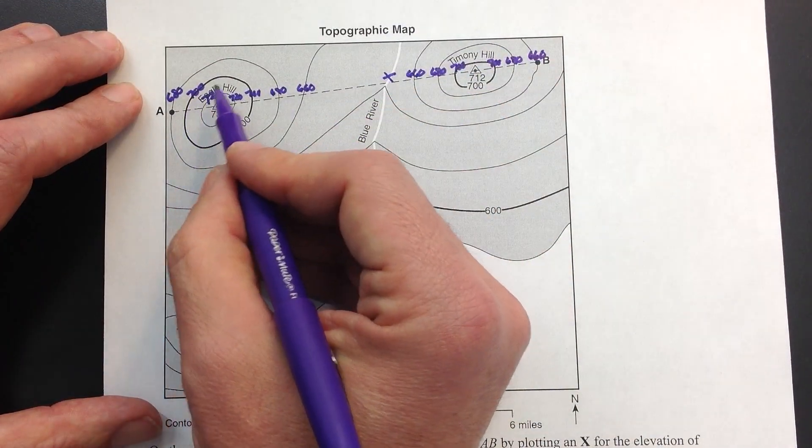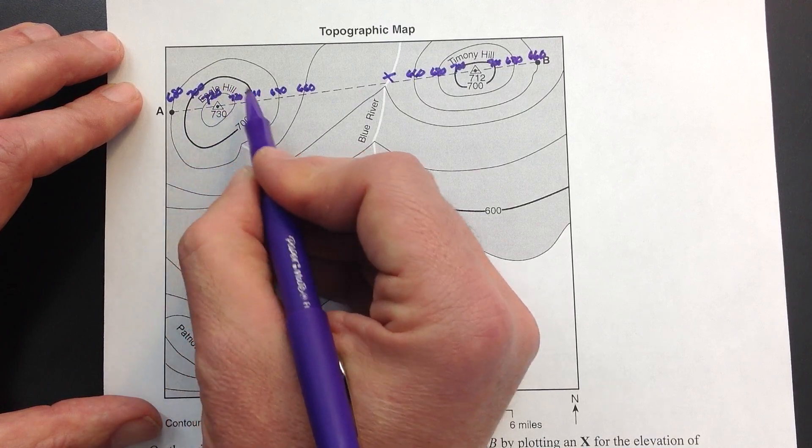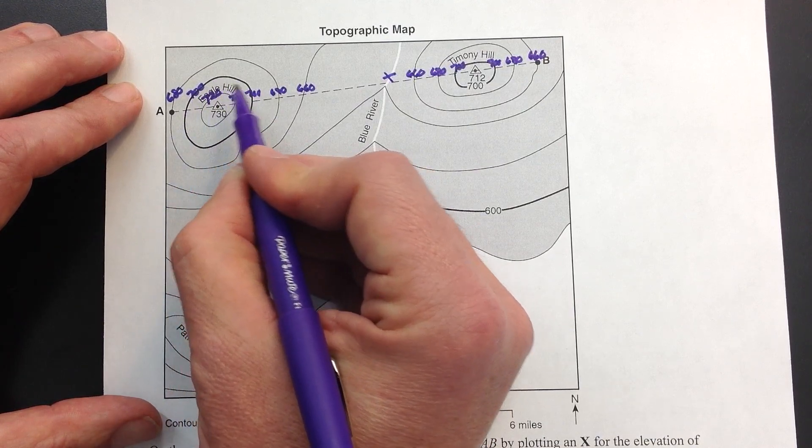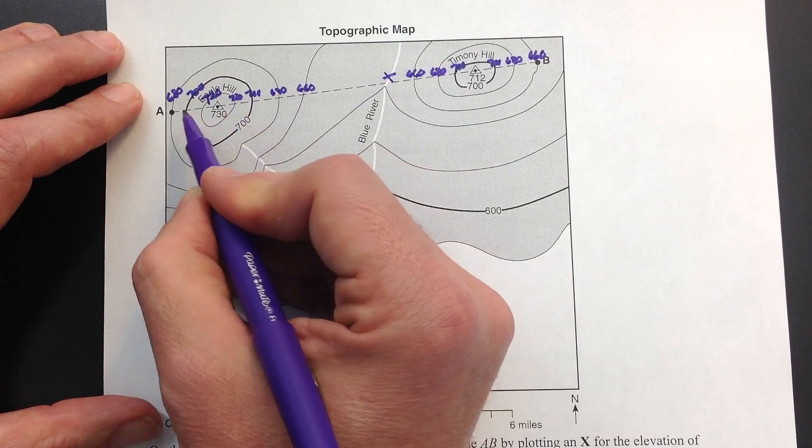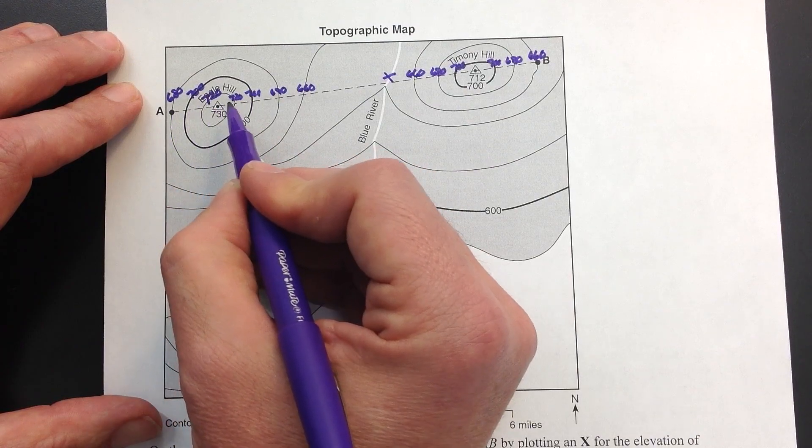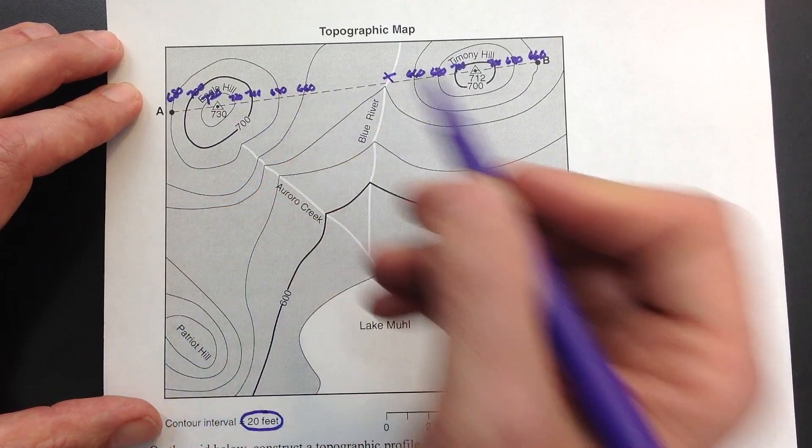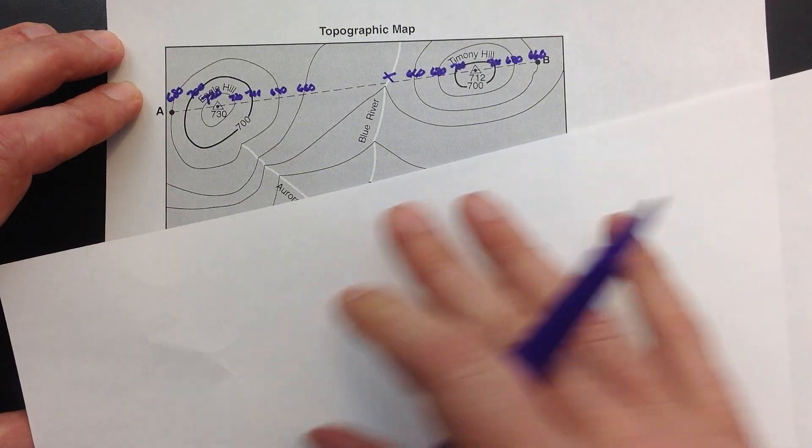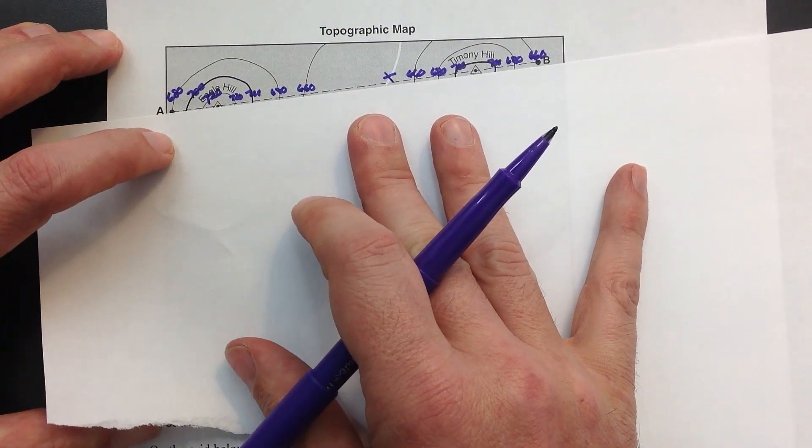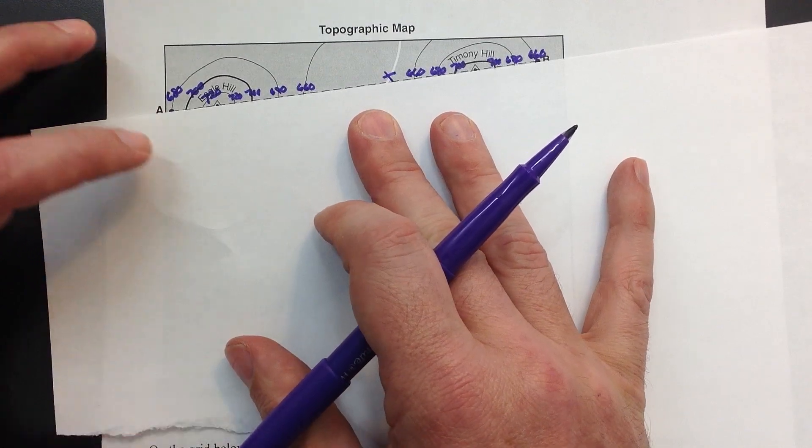So a lot of these circles, which represent kind of the elevation on the hill, they're going to have duplicate elevations. You have to include every single elevation that touches your baseline. Now watch how easy this is. The spacing of the lines is going to be really important. We want to make sure it's exactly perfect.